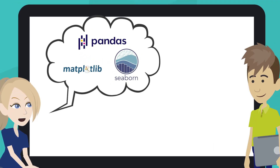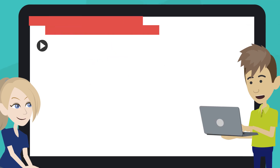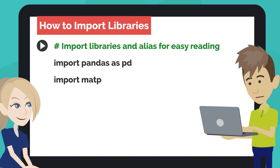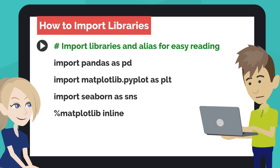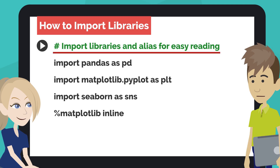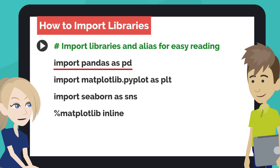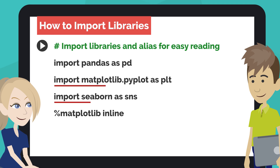How can we import Pandas, Matplotlib, and Seaborn? Type the code like this into the first code cell of your notebook. The line starting with a hash symbol is just a comment — in Python, we use the hash symbol to write a single-line comment, which is ignored by the Python interpreter. This code means importing Pandas as PD, importing Matplotlib as PLT, and Seaborn as SNS.